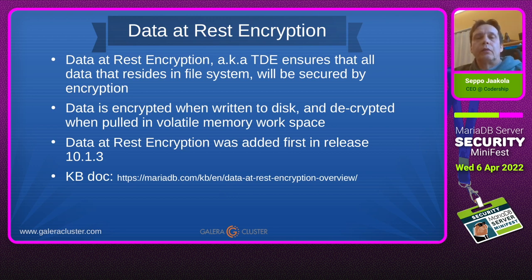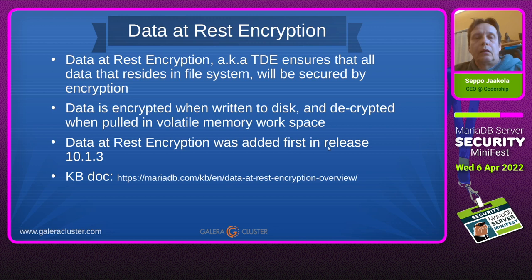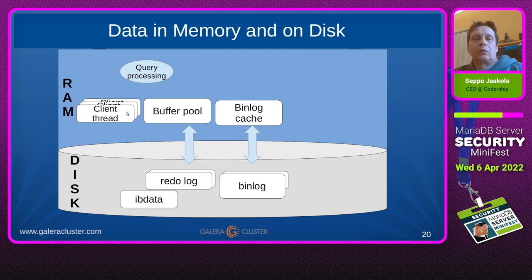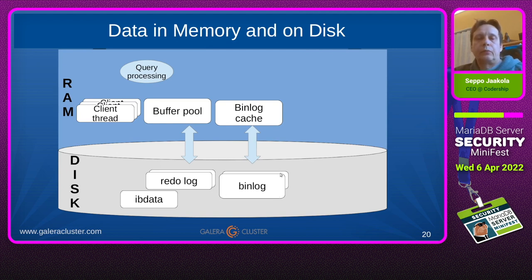Data at rest encryption is a feature where you can encrypt all data that remains on disk on the file system statically. This feature was added to MariaDB first in version 10.1. From the MariaDB server side, you have elements in main memory — the biggest bulk being the InnoDB buffer pool — plus client thread structures, binary log caching, and so on. Eventually data is written to disk: for InnoDB there are data files, redo log files, and also binary log files.